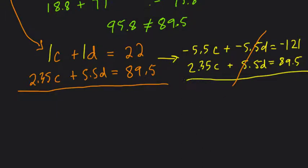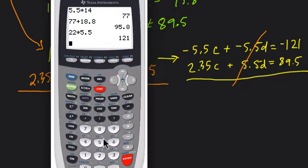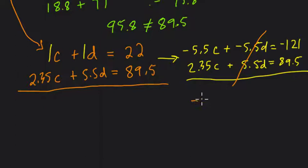So 2.35 minus 5.5, 2.35 minus 5.5 is negative 3.15. It's okay, we don't have negative cats, because here we have a negative sum as well.